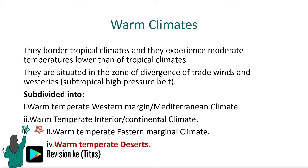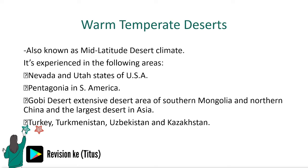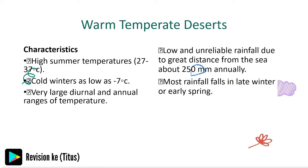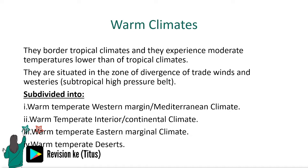The warm temperate deserts, also known as the mid-latitude desert climate, are experienced in the following areas: Nevada and outer states of the USA, Patagonia in South America, the Gobi Desert, and Turkey. These are the warm climates, which border the tropical climates and experience moderate temperatures lower than those of the tropical climates.